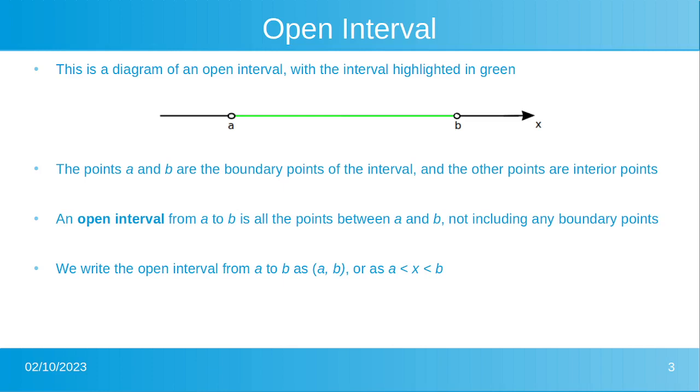An open interval from A to B is all the points between A and B not including any boundary points. We write the open interval from A to B as (a, b), or as a is less than x, x is less than b.